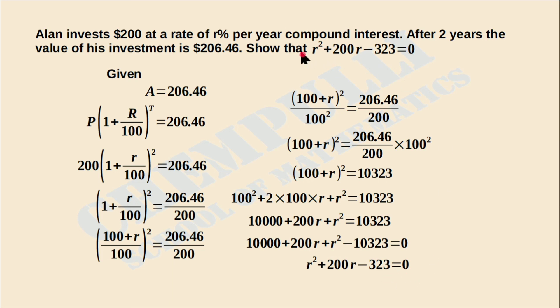This is our result. We have shown that R² + 200R - 323 = 0. Hence the proof. Thank you.